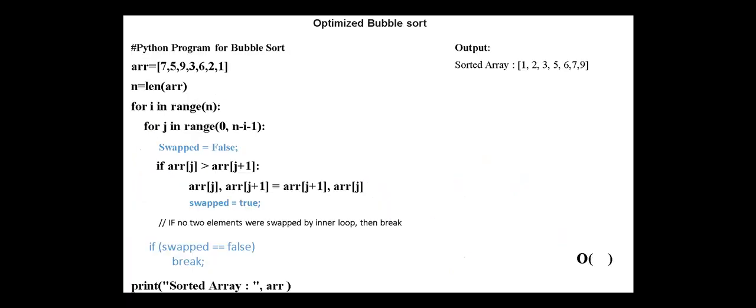To implement the optimized bubble sort, a boolean variable, for example, swapped, is initialized to false before entering the internal or before starting each pass.